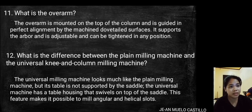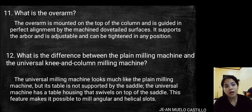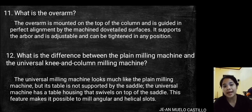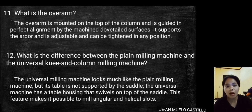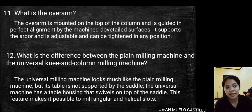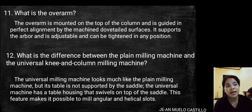What is the overarm? The overarm is mounted on the top of the column and is guided in perfect alignment by the machined dovetail surfaces. It supports the arbor and is adjustable and can be tightened in any position.